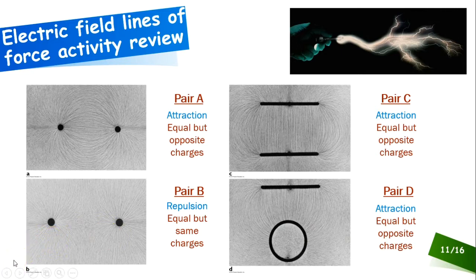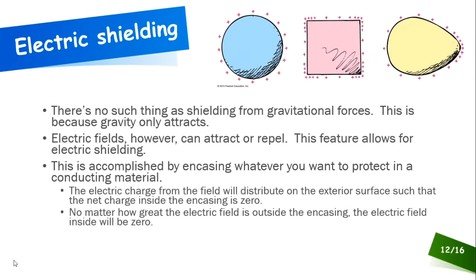That's how you analyze electric field line pictures — keep this in mind as you may see it again. Now, recall that there's no shielding from gravitational forces, but you can shield yourself from electric forces. This is because electric fields are bi-directional — they can attract and repel — whereas gravity only attracts. It's possible to have a reaction built into the field that cancels out the field's effect, using conducting material to form a shield.